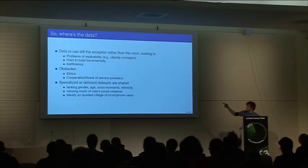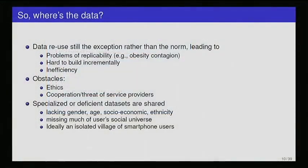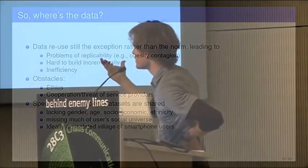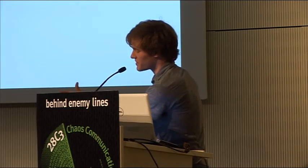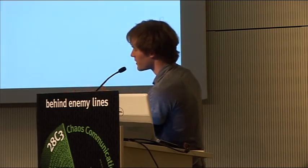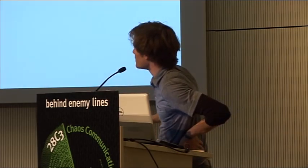The first most major problem is that of replicability. I mentioned the recent finding that obesity is contagious across friendship ties. This finding is highly contentious, and other economists have shown this probably isn't the case. But the whole thing can't really be settled because the original data set wasn't available. It's hard to refute an idea if you don't have access to the original data. It's very hard to build up incrementally as a field without these shared data sets. You can't say this person discovered this about this data set, building on the communities they found or the structures they found, we're going to take it a step further.